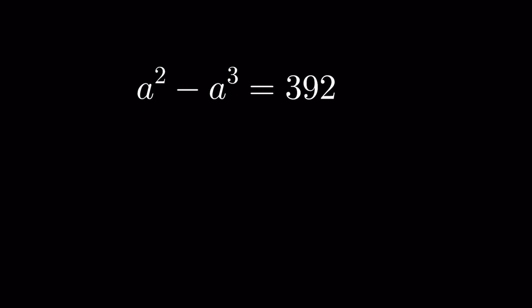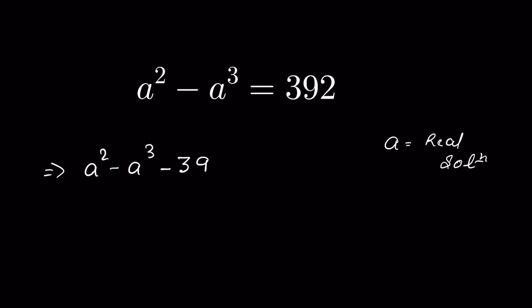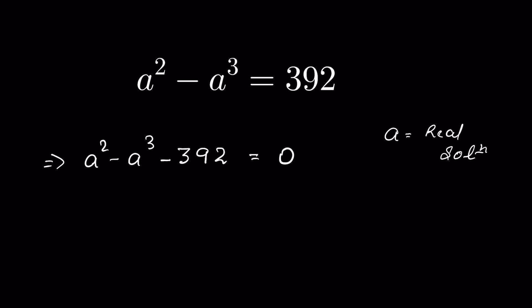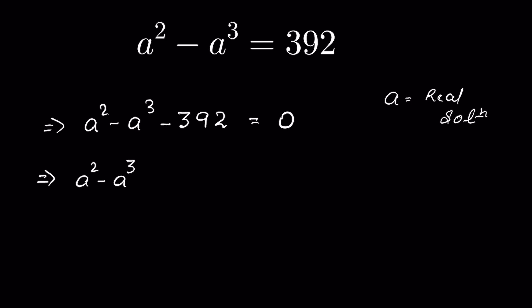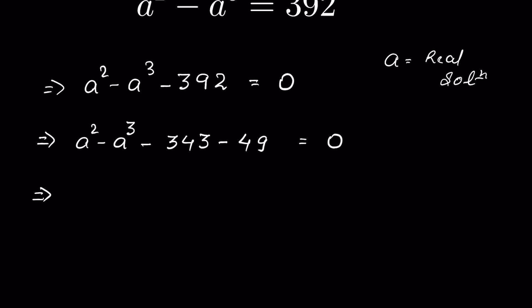We have a squared minus a cubed equals 392 and we need to find the real solutions for a. Sending 392 to the left-hand side gives us a squared minus a cubed minus 392 equals 0. We break down 392 as minus 343 minus 49, choosing these values so that one number forms a cube and one forms a perfect square.